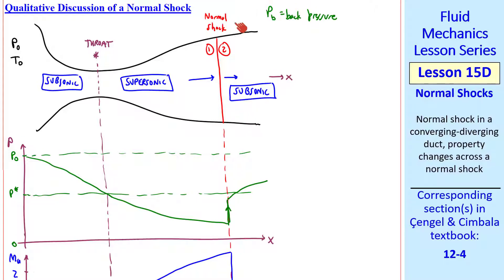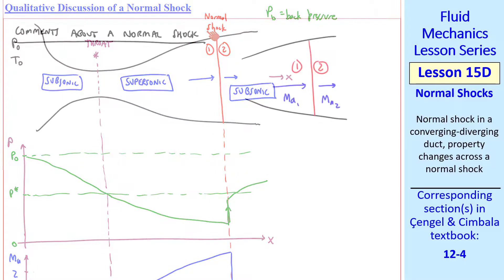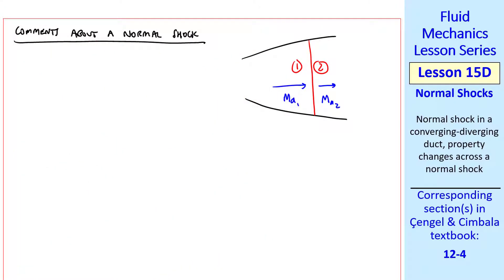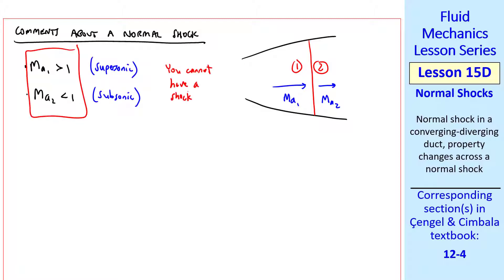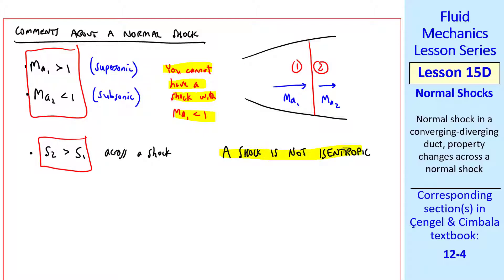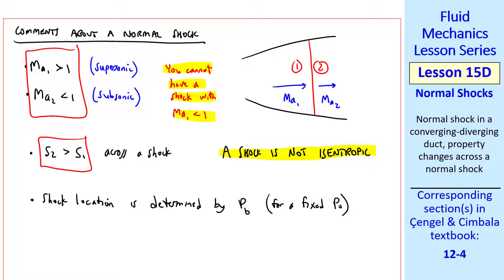Let's examine this normal shock in some detail. First of all, Mach number one has to be supersonic, and Ma2 has to be subsonic, as we've already stated. You cannot have a shock with a subsonic Mach number upstream — this would be impossible. Why? Well, you'd be violating the second law of thermodynamics, because entropy must increase across a shock. A shock is not isentropic. Shock location is determined by Pb, the back pressure, for some fixed value of stagnation pressure P0.